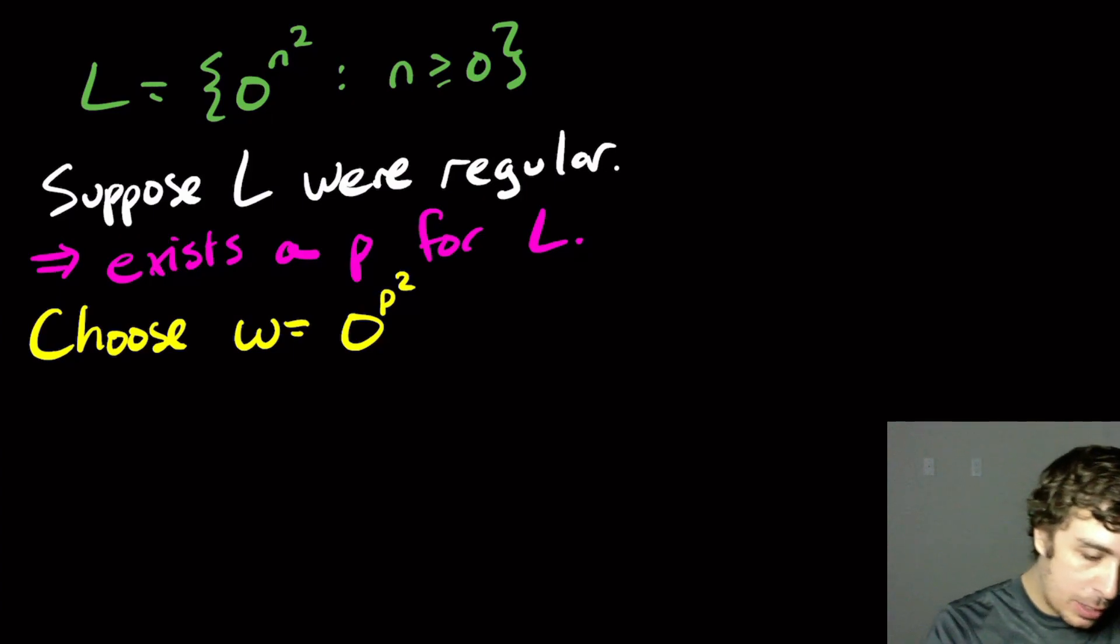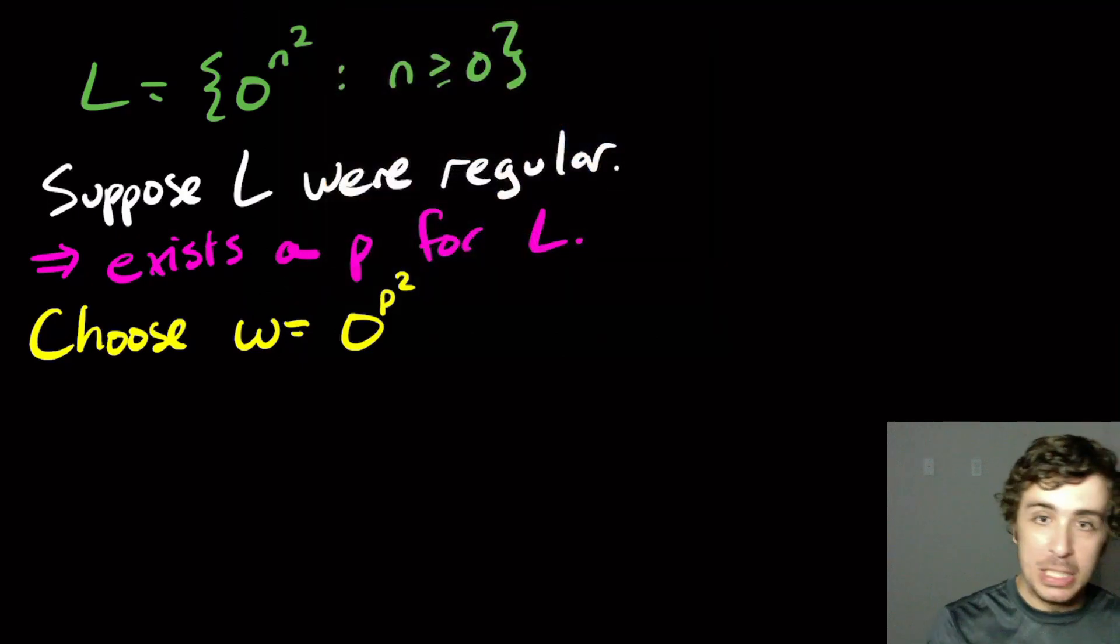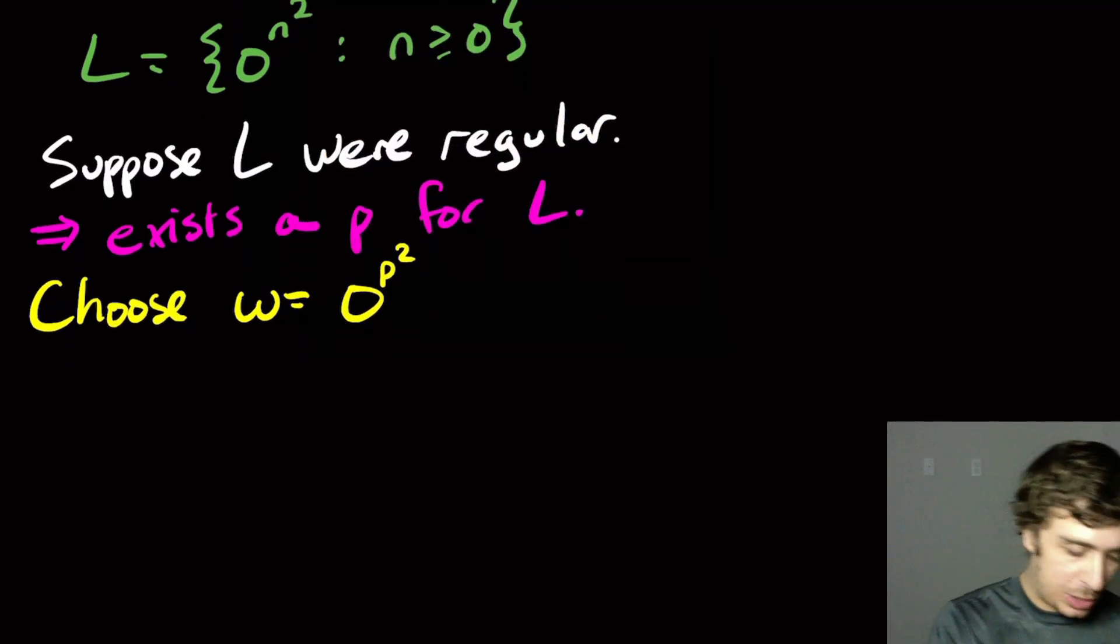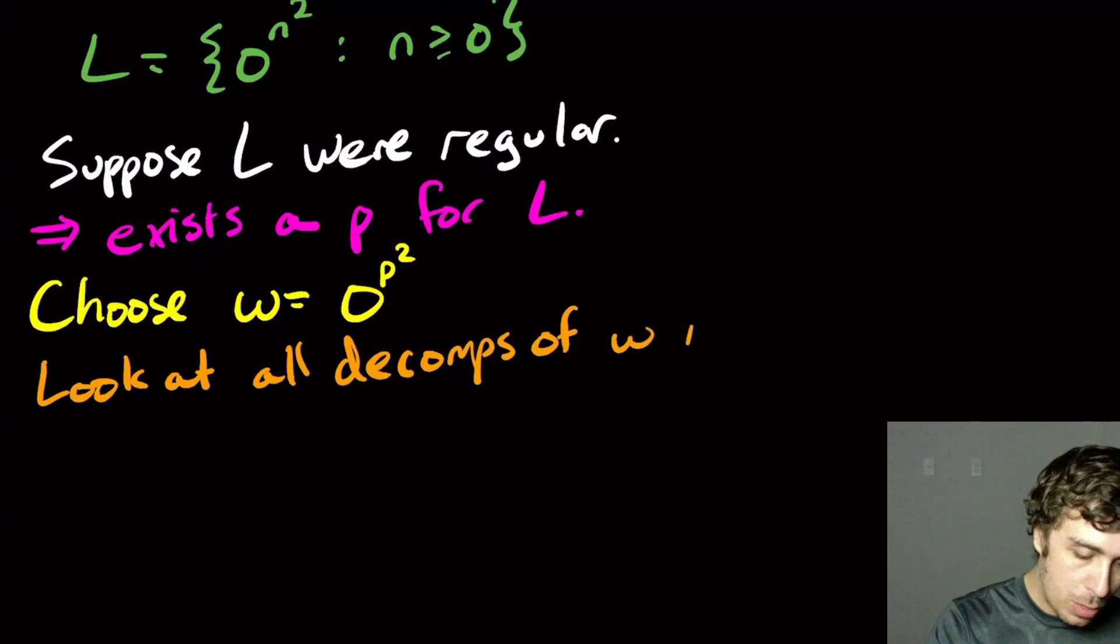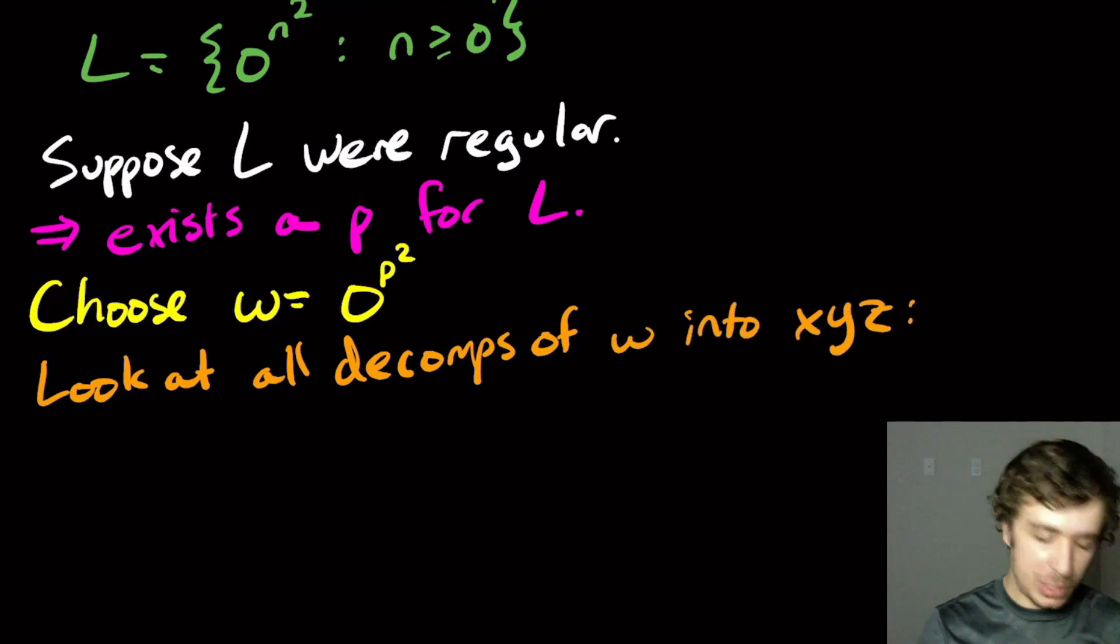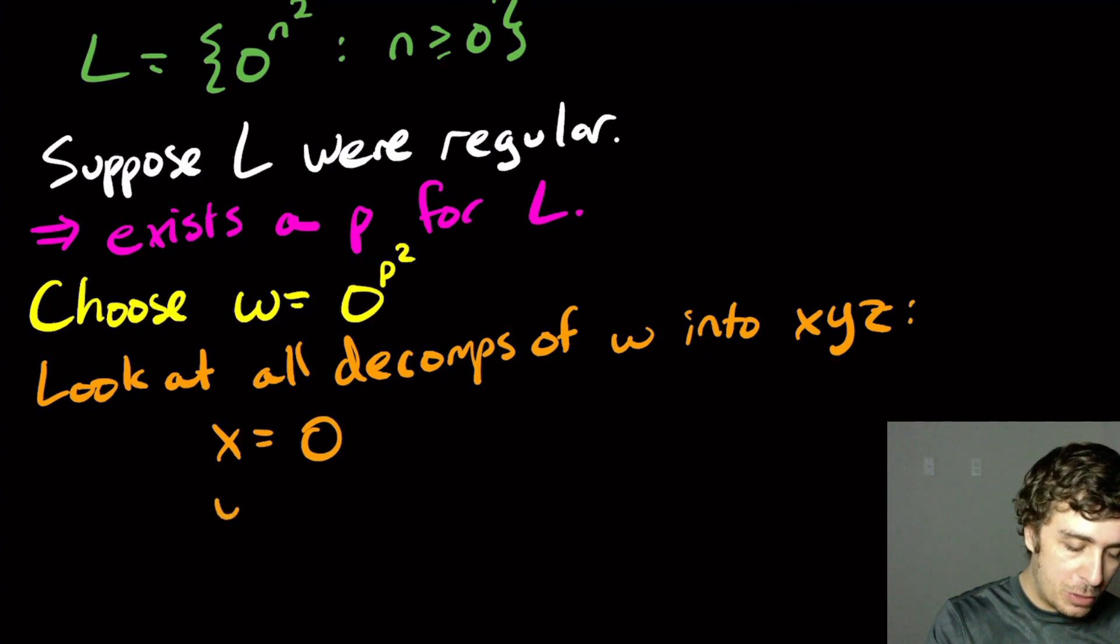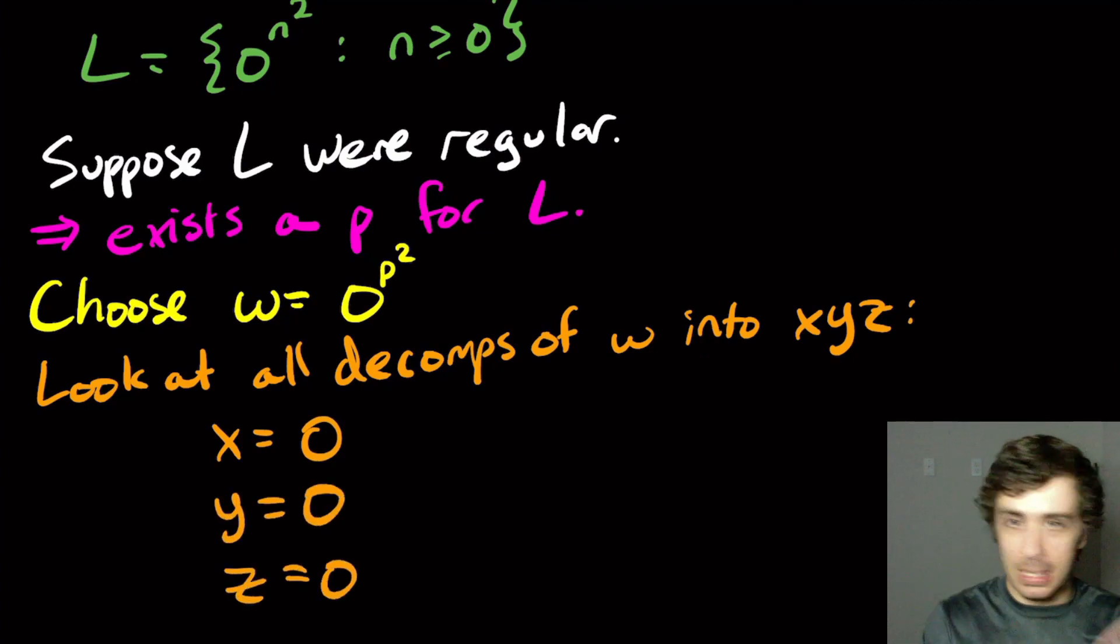So what are we going to do? Well, we got to look at all decompositions of the string into those three parts. So look at all decompositions of w into x, y, and z according to the three parts. Well, since the whole string is zeros here, we know that the x part is going to be some number of zeros, y is some number of zeros, and z is some number of zeros, because the whole string is zeros.